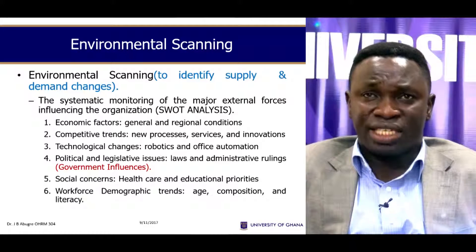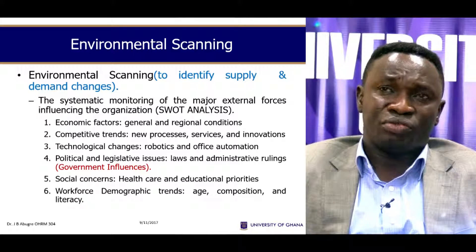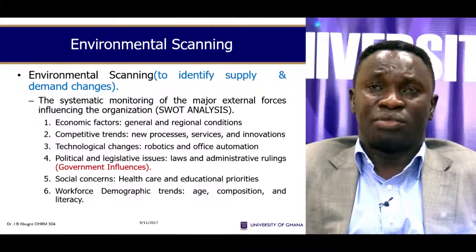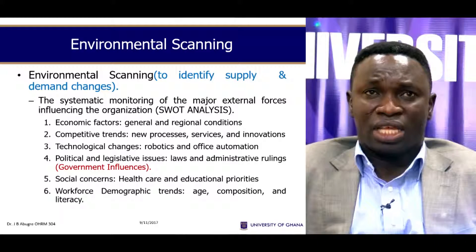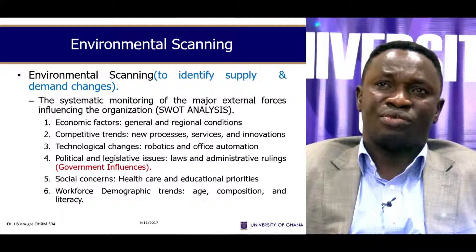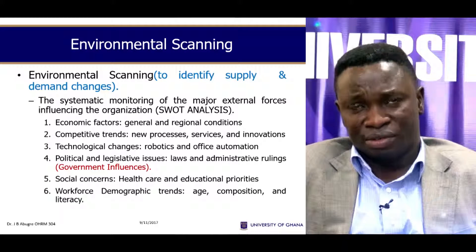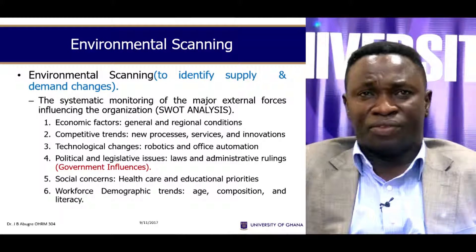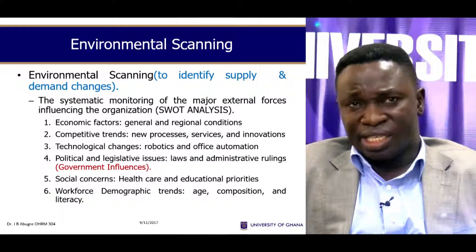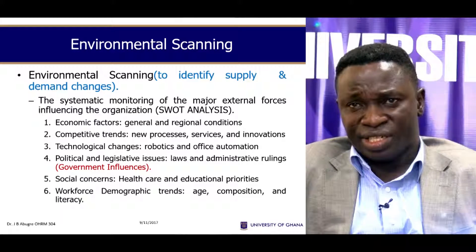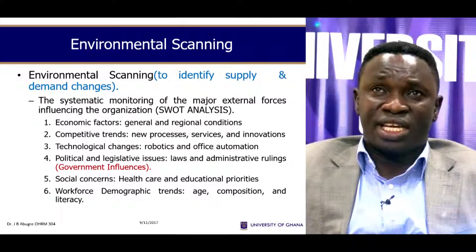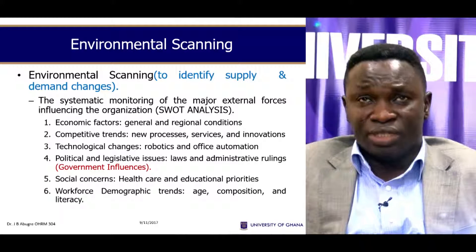Third, technological changes — these include robotics and office automation, and we need to plan to have people who can manage these things. Fourth, political and legislative issues — these include laws and administrative rulings, especially with government influences. Fifth, social concerns like healthcare and educational priorities. Sixth, workforce demographic trends — that is, age, composition, and literacy. These are the main environmental factors that we need to scan.